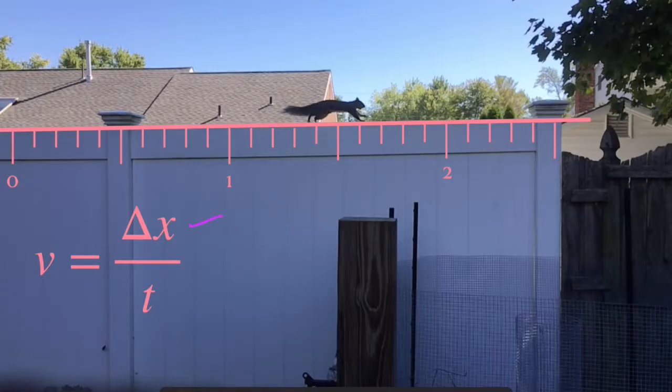When we talk about finding velocity mathematically, we use displacement. Remember, displacement is like distance, but not. Displacement needs a direction, such as plus or minus.